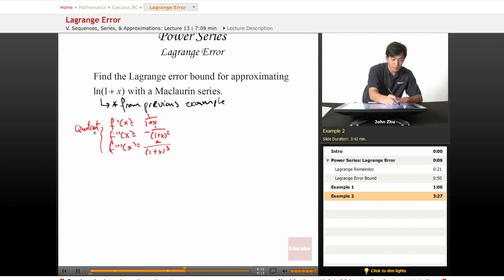Now we have to notice a pattern here. f to the nth order derivative of x equals (-1)^(n-1) times (n-1)! all over (1+x)^n.